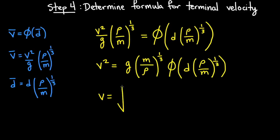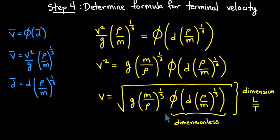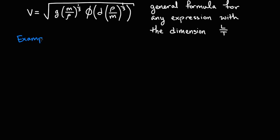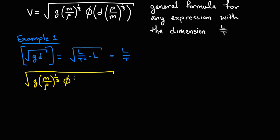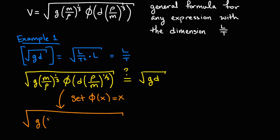The fourth and final step is to rearrange to find a formula for the terminal velocity. The key here is that the equation for the terminal velocity has the correct dimension. And this formula is so general that any expression with dimension of length over time can be written in terms of this formula by defining phi in different ways. Let's see how. First, create an expression from the independent variables that has the same dimension as velocity. One such expression is the square root of g times d. By setting the formula for v equal to the square root of gd, we see that by setting phi equal to the identity function, phi of x equals x, the two sides of the equation can be made equal.